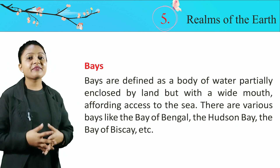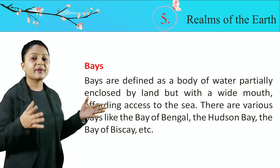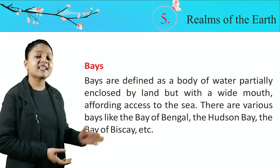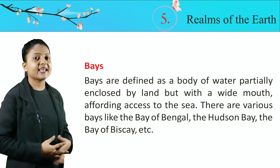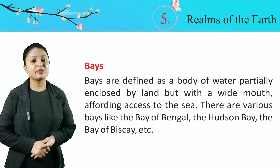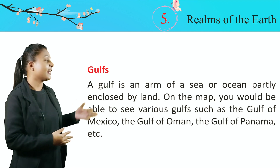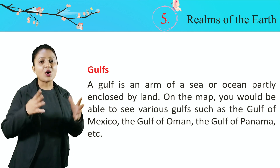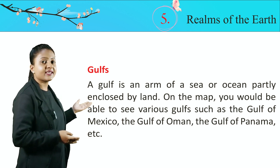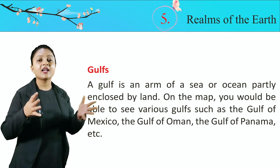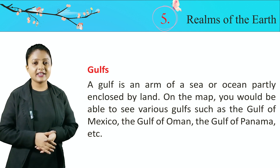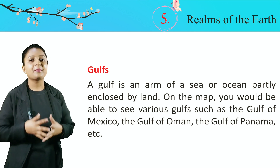Bays. Bays are defined as a body of water partially enclosed by land, but with a wide mouth affording access to the sea. There are various bays like the Bay of Bengal, the Hudson Bay, the Bay of Biscay, etc. Gulfs. A gulf is an arm of a sea or ocean partly enclosed by land. On the map, you would be able to see various gulfs, such as the Gulf of Mexico, Gulf of Oman, Gulf of Panama, etc. Gulf wo hoti hai jo teen sides se land se ghiri hoti hai aur ek side se ocean ka part hoti hai.